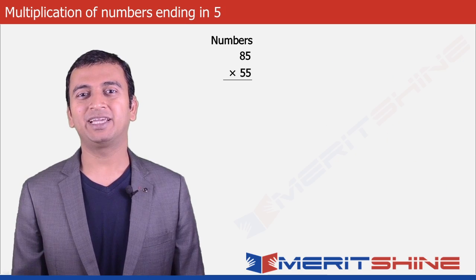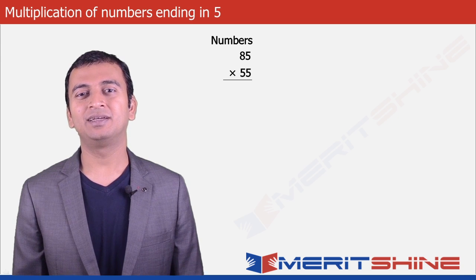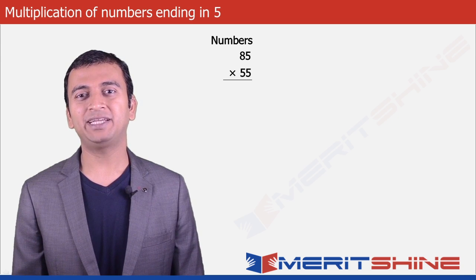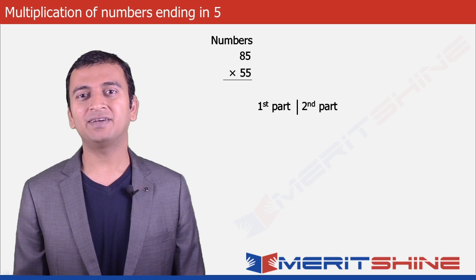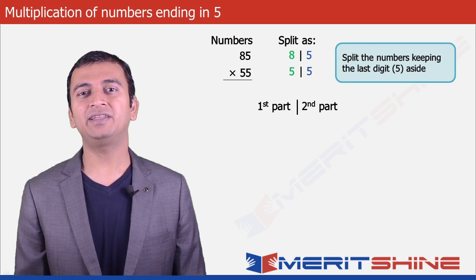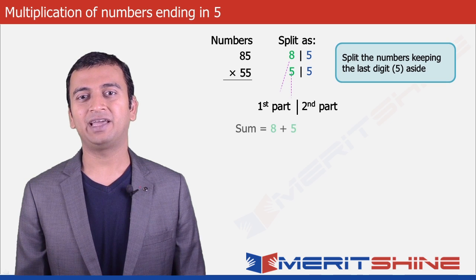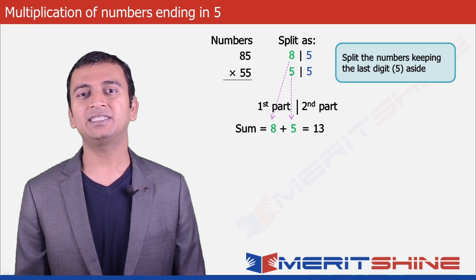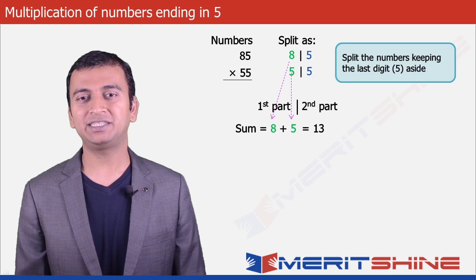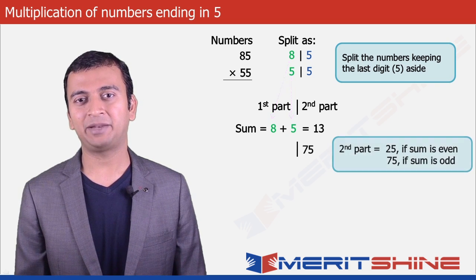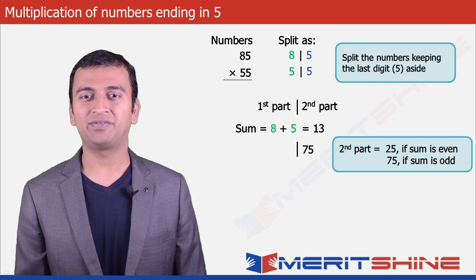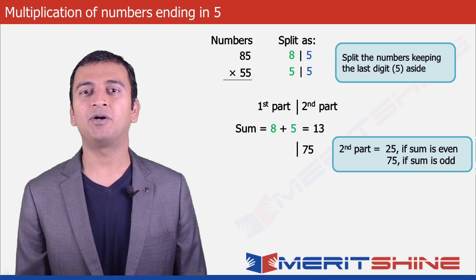Let us now take 85 × 55 as an example. To write down the answer, we will have to make two parts. If we leave aside the unit digits, we will be left with 8 and 5 respectively. Now if we add 8 and 5, we get 13 which is an odd number. So we will place 75 in the second part instead of 25 which was placed when the sum obtained was even.